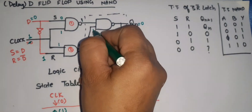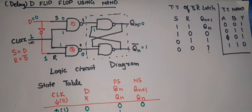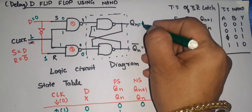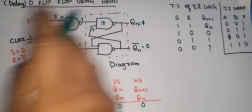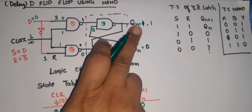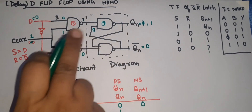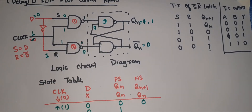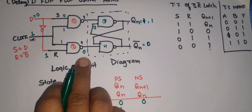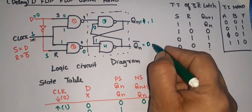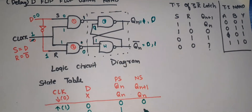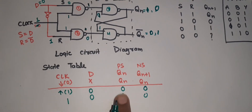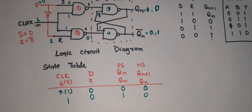We can verify: if Qn is zero, Qn-bar is one, feedback is one, both inputs are one, output is zero — which matches. Now for present state one: its complement is zero. Gate number four has input zero, feedback gives one; one and one gives output zero. So whether present state was zero or one, when D is zero, next state Qn+1 is zero.